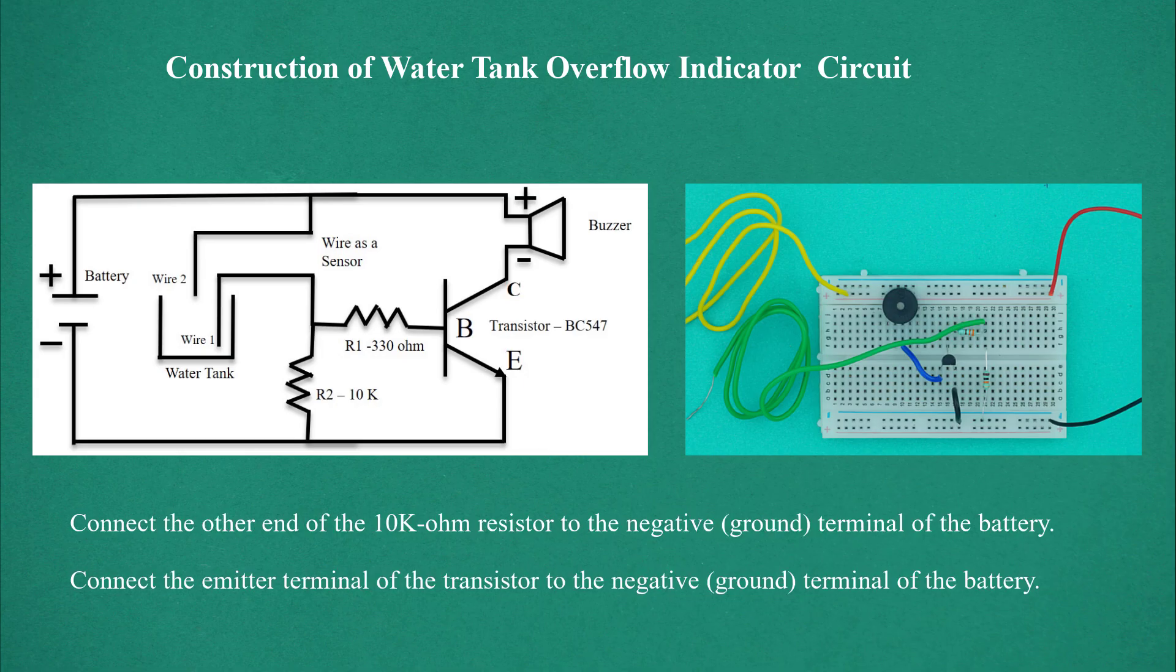Connect the other end of the 10k-ohm resistor to the negative ground terminal of the battery. Connect the emitter terminal of the transistor to the negative ground terminal of the battery.